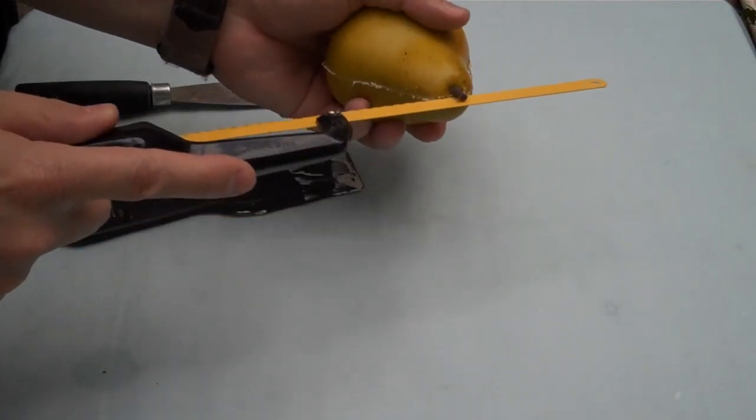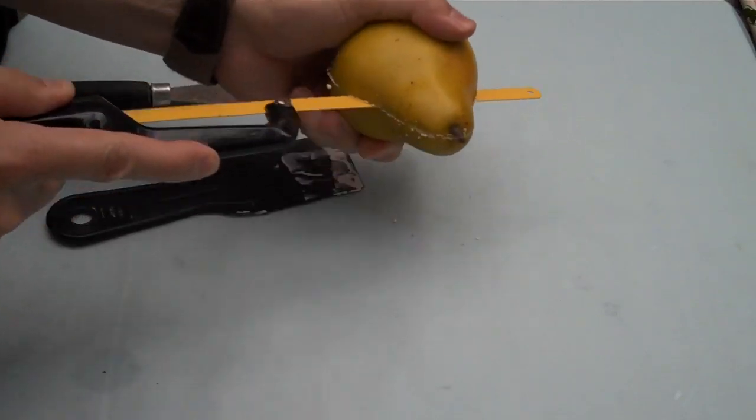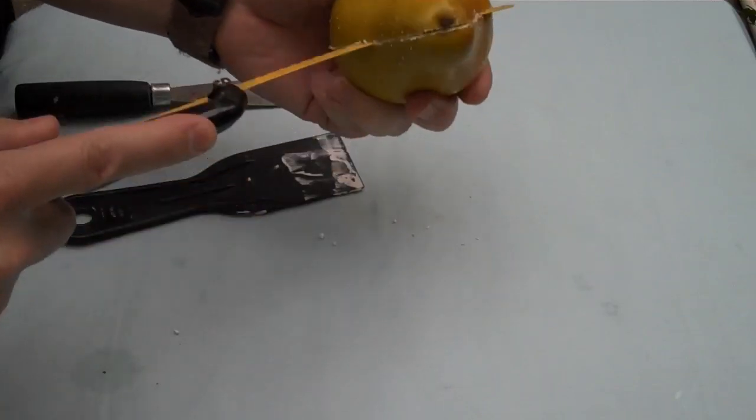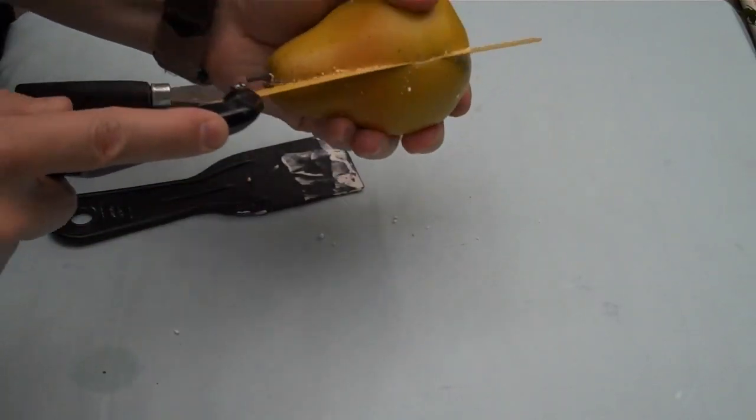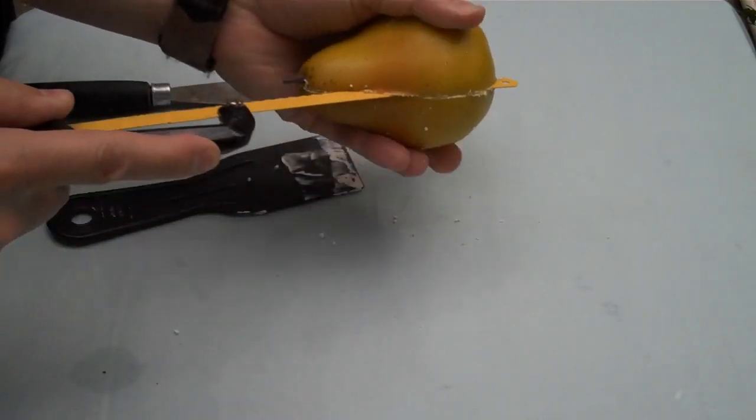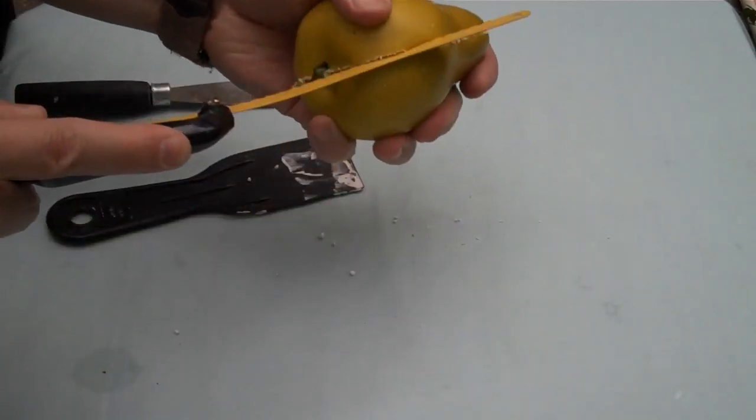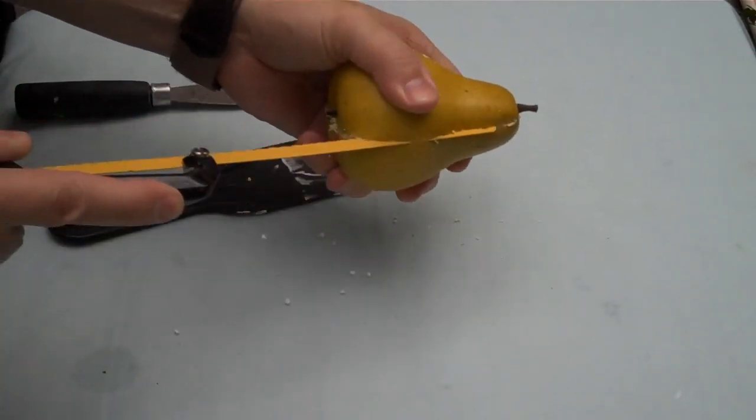The idea is you take the hacksaw, you're going to cut down to where you hear that scraping. That's the weight in the middle. And then from there you'll work it around until you hear the scraping, and keep working your way around the pair until you hear the scraping everywhere.